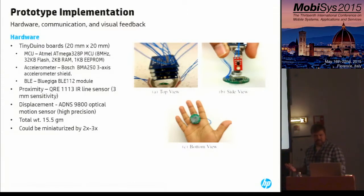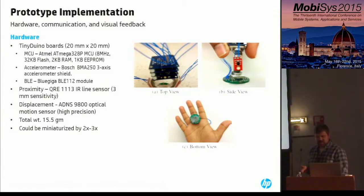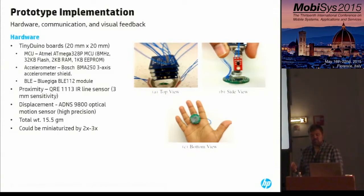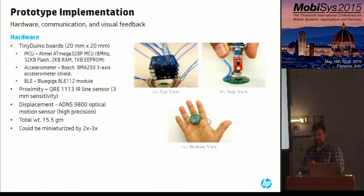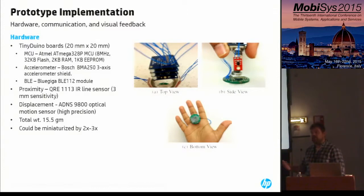We implemented Typing Ring using the off-the-shelf TinyDuino platform. The top portion of the ring consists of a stack of three TinyDuino boards: a microcontroller, a three-axis accelerometer, and a BlueGiga Bluetooth Low Energy radio module. The side proximity sensors are IR line sensors with three-millimeter sensitivity, and the displacement sensor underneath is implemented using a low-power optical mouse sensor. The total weight of the ring is about 15 grams.